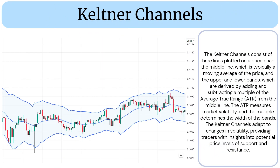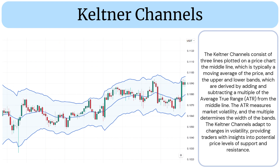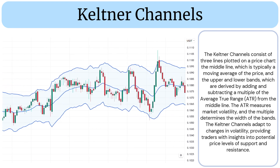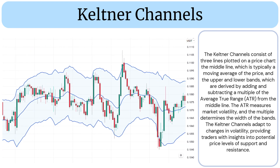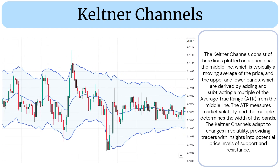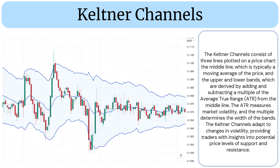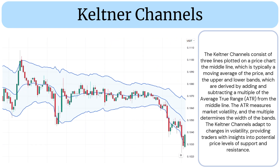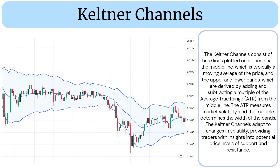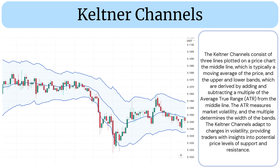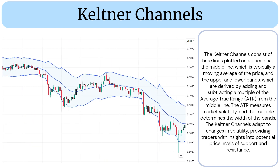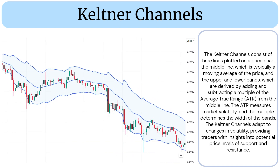Keltner Channels. The Keltner Channels consist of three lines plotted on a price chart. The middle line, which is typically a moving average of the price, and the upper and lower bands, which are derived by adding and subtracting a multiple of the average true range from the middle line. The ATR measures market volatility, and the multiple determines the width of the bands.